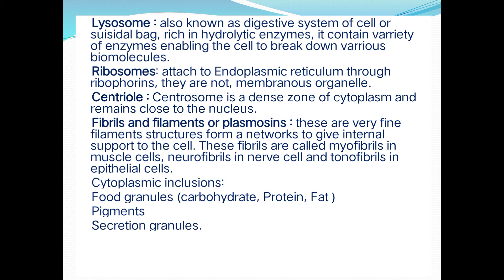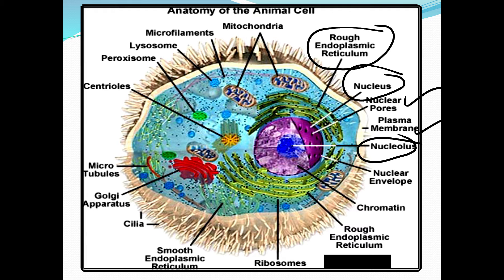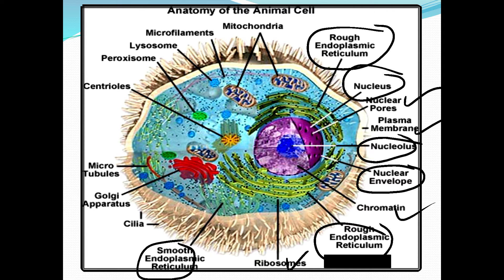Looking at the cell photograph: the nucleus and nucleolus are visible, the nuclear envelope and chromatin are present, rough endoplasmic reticulum shows a greenish appearance, ribosomes appear as pointed structures, smooth endoplasmic reticulum is also visible. The Golgi apparatus is shown in red, along with microtubules, cilia, centriole, mitochondria, microfilaments, lysosomes, and peroxisomes.